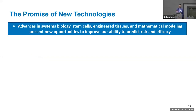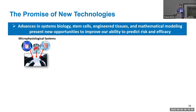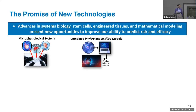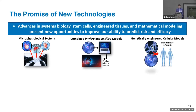There are many promising new technologies: advances in systems biology, stem cells, engineered tissues, and mathematical modeling. These present new opportunities to improve our ability to predict risk and efficacy. This includes micro-physiological systems, combined in vitro and in silico models — an approach we've taken in the cardiac safety space — as well as cellular models that can be genetically engineered. We've actually used cellular models to assess efficacy in rare diseases where sponsors couldn't enroll patients, extending indications of certain drugs based on cellular data.